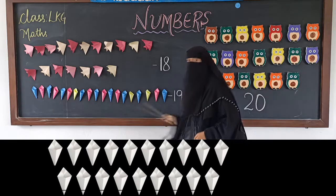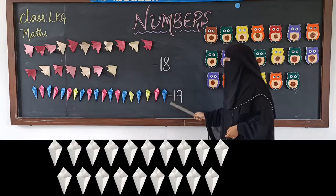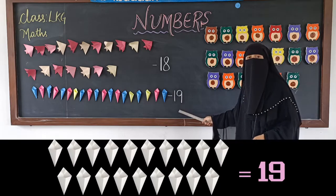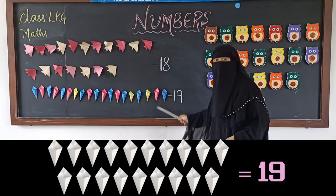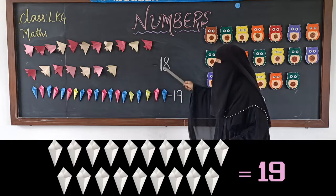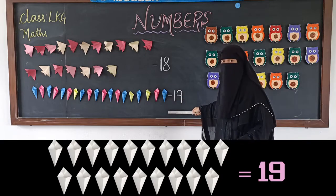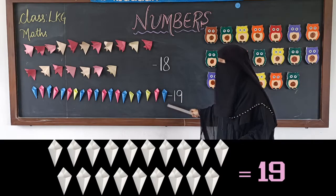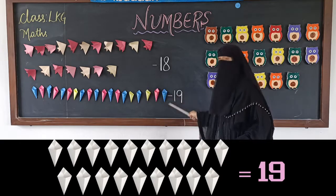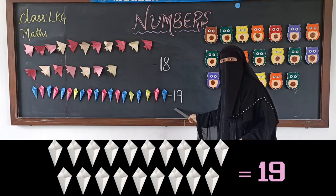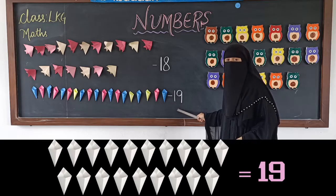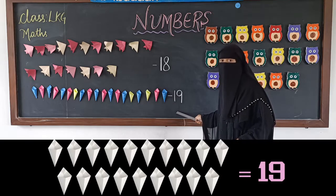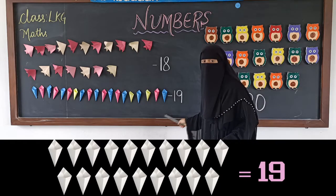Now altogether how many cones are there? 19! 1 and 9 makes number 19. After 18 the next number is 19. Altogether how many cones? 19. 1 and 9 makes 19 — number 19.